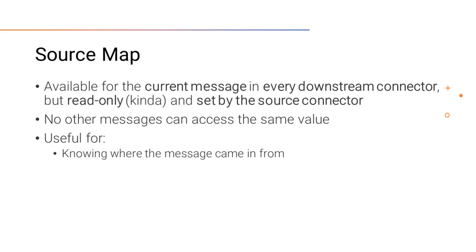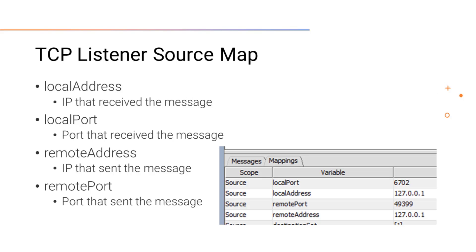Let's look at a few properties that some source connectors set the source map variables to, and I'll also leave a link with all the source maps I've found for different connectors and processes. First we have the TCP listener. The TCP listener stores the local address, which is the port that received this message — in most cases the Mirth instance IP — then the local port, the remote address which is the IP that sent the message, and the remote port which is the port where the message was sent from.